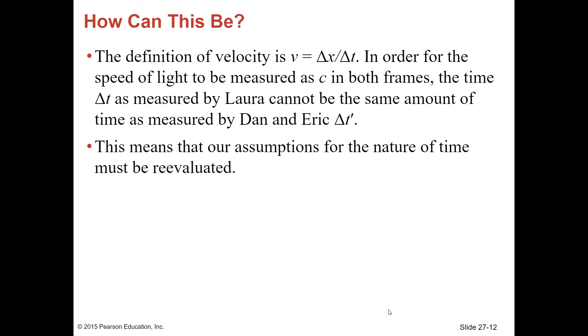The definition of velocity is displacement over time, delta X over delta T. In order for the speed of light to be measured as C in both frames, the time delta T as measured by Laura cannot be the same amount of time as measured by Dan and Eric, delta T prime. This means that our assumptions for the nature of time must be reevaluated. We're going to get into time dilation and we'll talk about that in class.